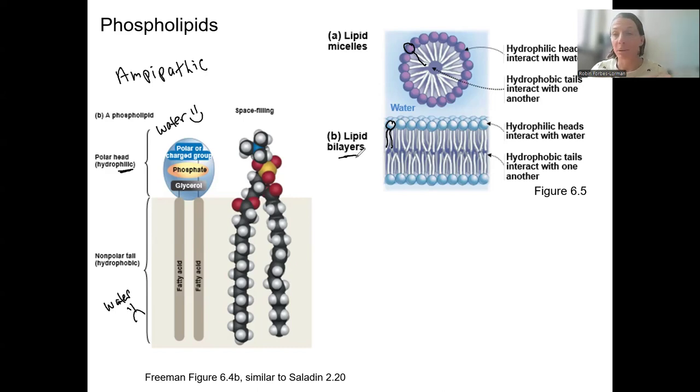In either case, this is a spontaneous process that requires no energy because it's the most stable. This is how the first cell was thought to have formed, by forming a plasma membrane and keeping some things out and some things in.